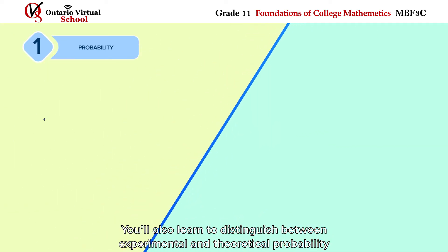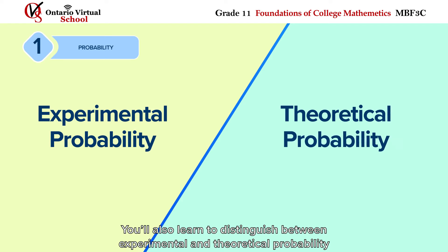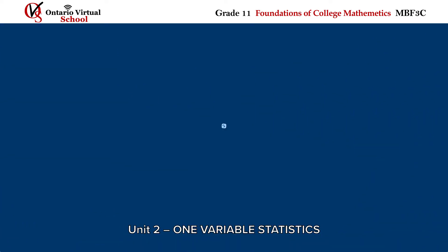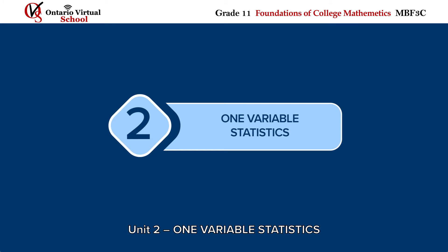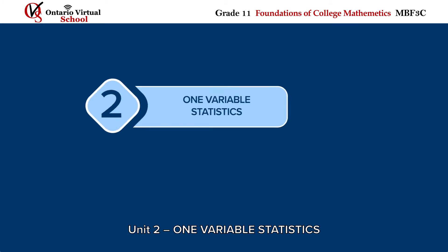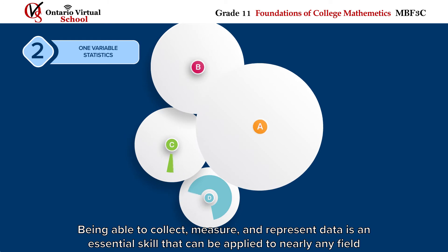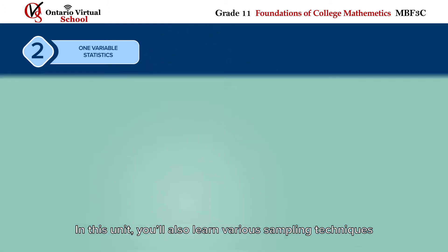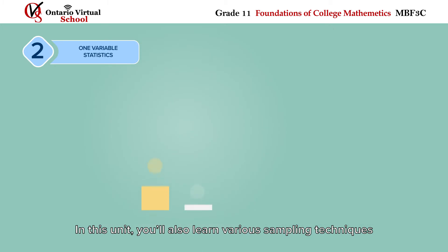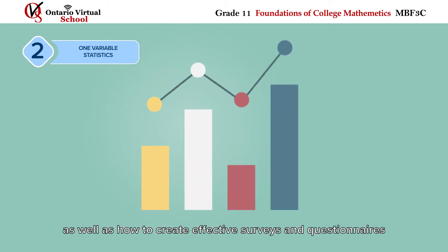You'll also learn to distinguish between experimental and theoretical probability. Unit 2: One Variable Statistics. Being able to collect, measure, and represent data is an essential skill that can be applied to nearly any field. In this unit, you'll learn various sampling techniques as well as how to create effective surveys and questionnaires.